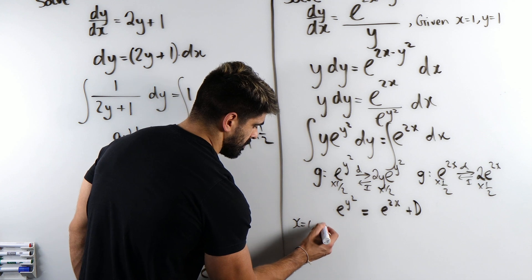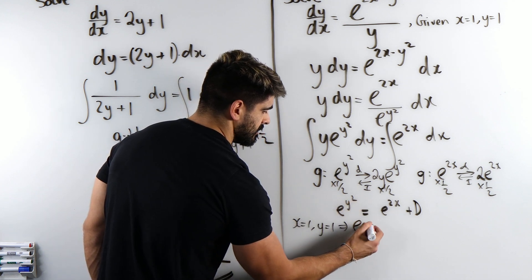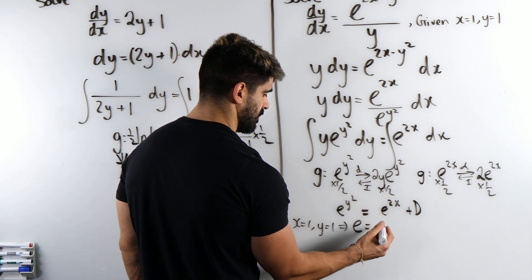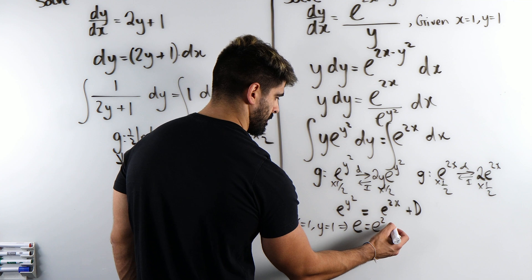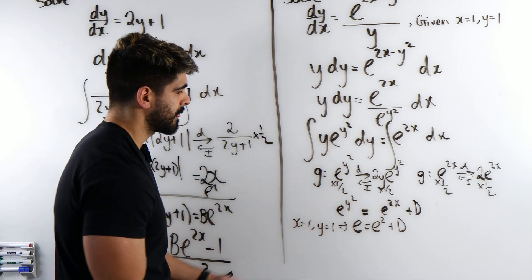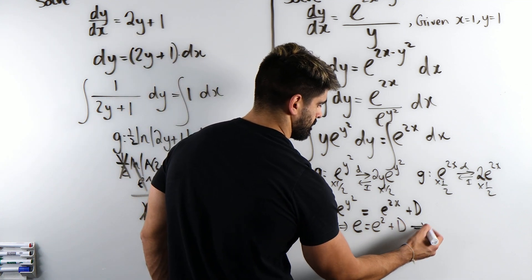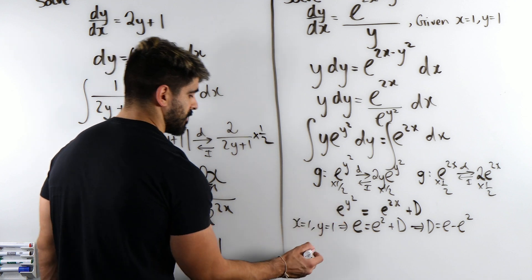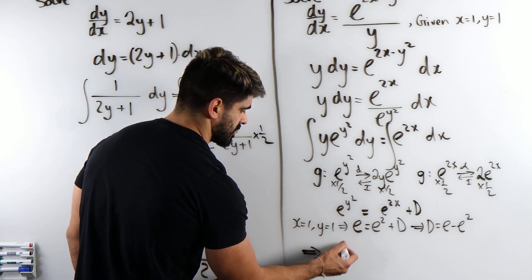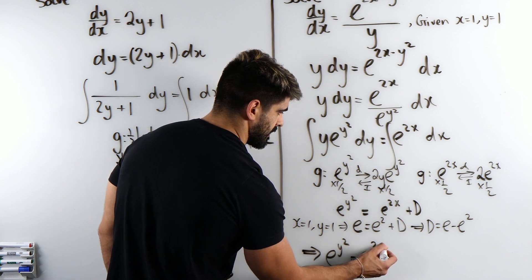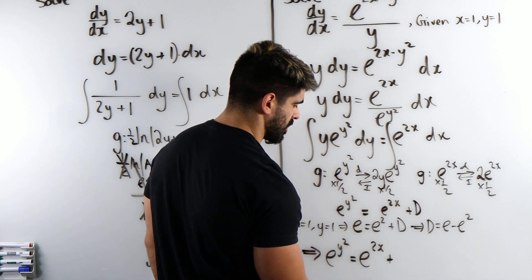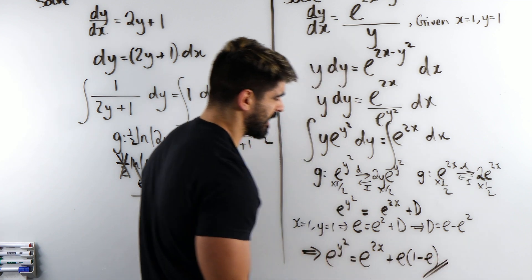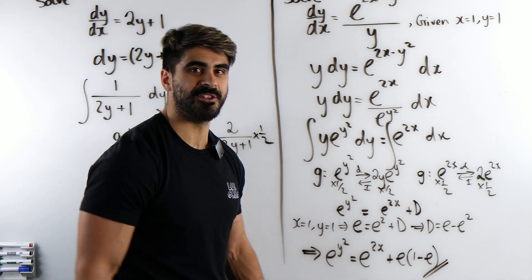Let's sub in x is 1, y is 1. When y is 1 you just get e. Yeah? e to the power of 1. And here you get e to the power of 2, isn't it? Plus d. So d is e minus e squared. And then we're done. So we have our final solution is e to the y squared is e to the power of 2x plus... I mean if you want to be posh here and factorize out e. I don't know why you'd want to do that. I'm blaming on you guys. I'm saying why would you want to do this? I wanted to do it if I'm honest. So yeah, that is my solution guys.